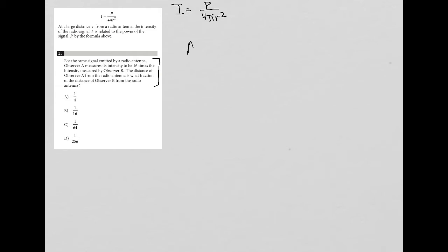I'm going to just write that down. So A is for observer A, and they get an intensity that's 16 times observer B's intensity. So I'll put a little B here for B's intensity and a little A to represent A's intensity. And then the distance of observer A from the radio antenna is what fraction of the distance of observer B from the radio antenna.